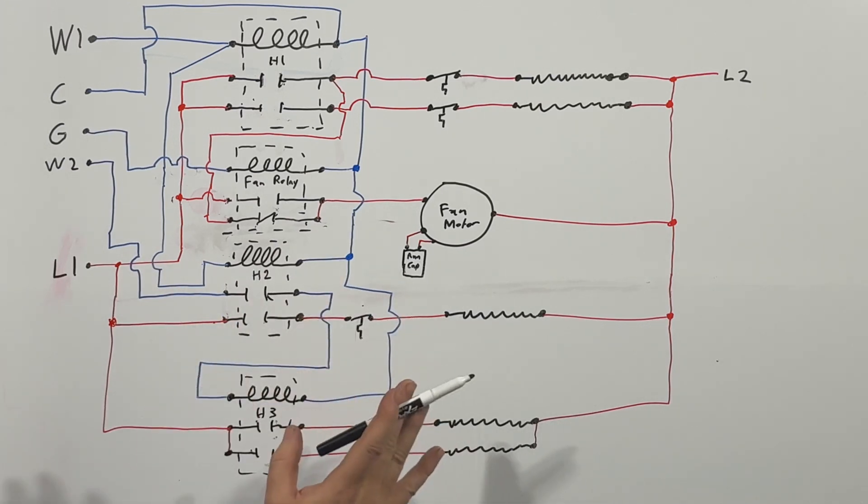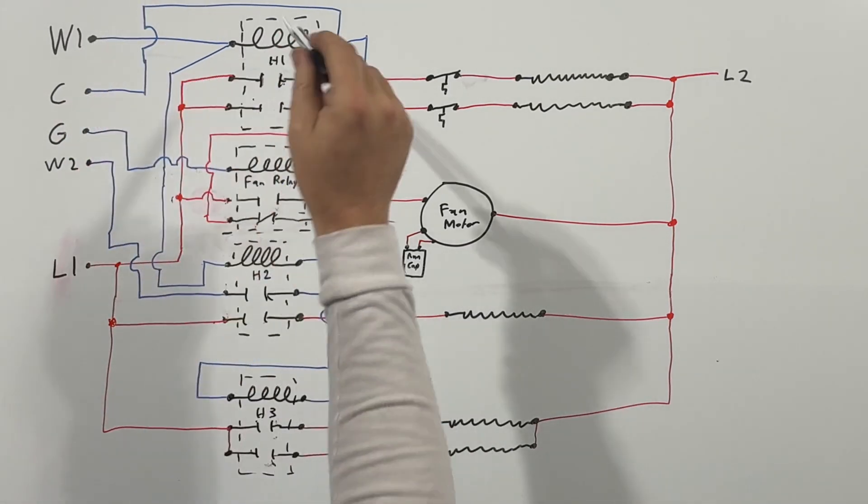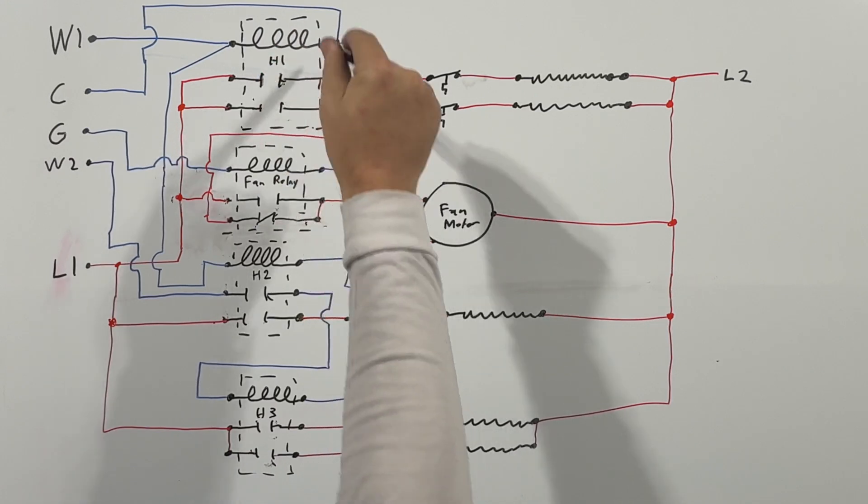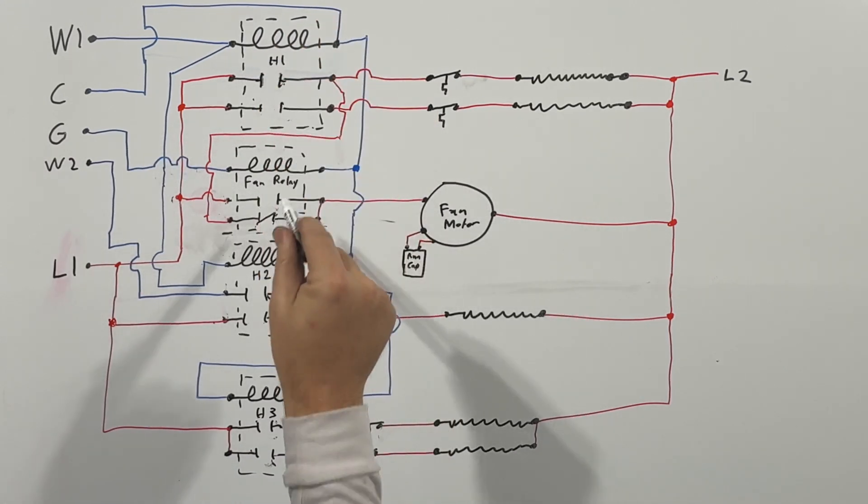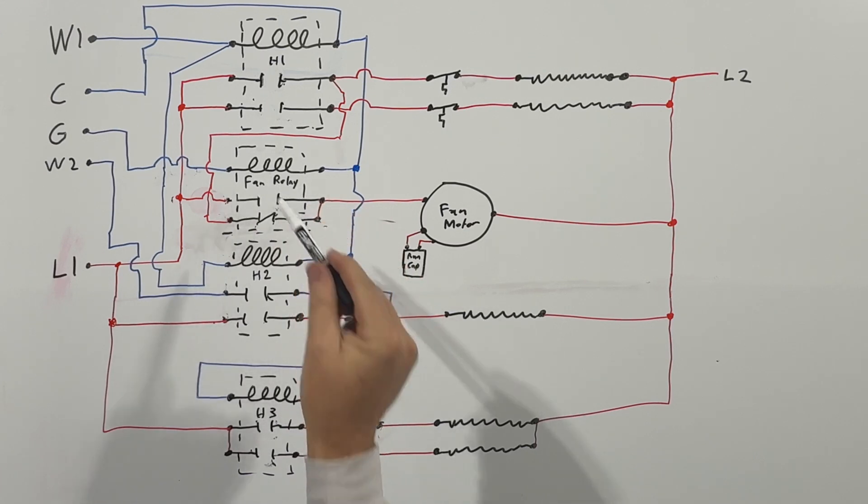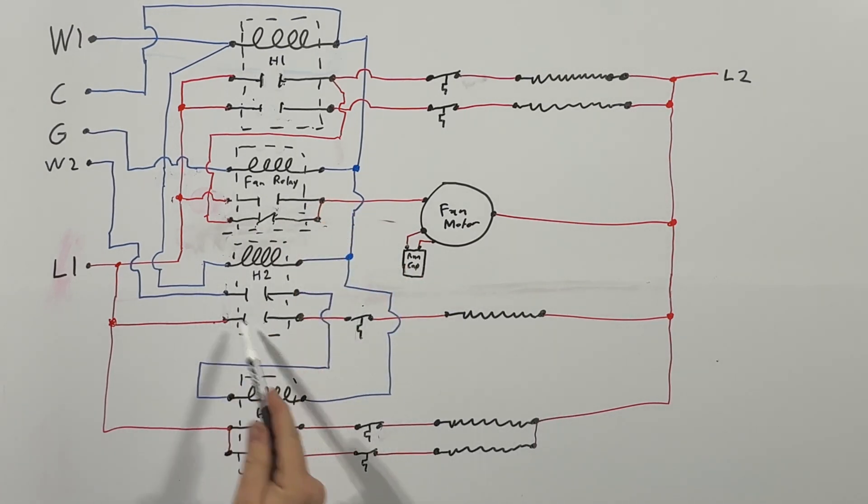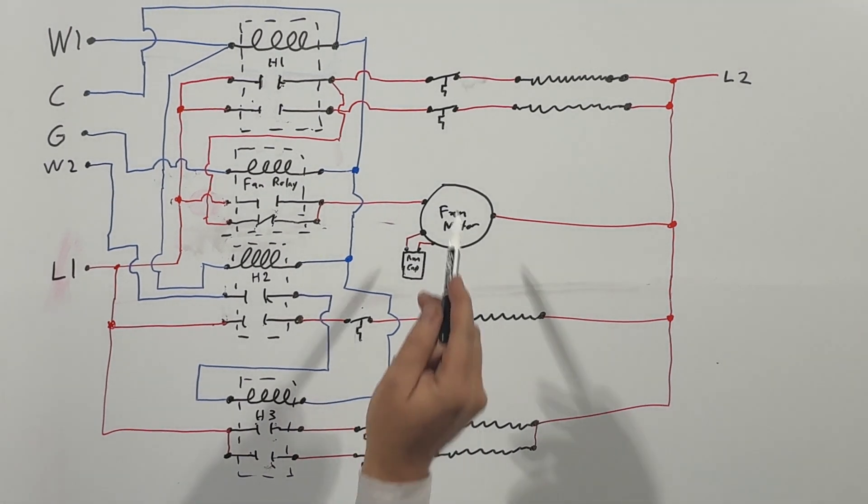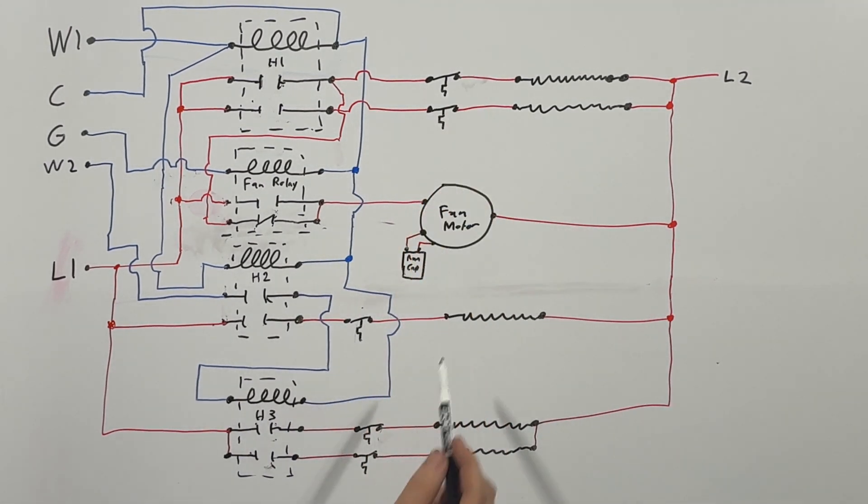So anyway, we have one relay here. This is a double stack sequencer here. We have a fan relay with a normally open contact and normally closed contact, and then we have another sequencer to stack right here and another sequencer down here. These are electric strips, blower motor, and these are our high limit switches because they're temperature switches.